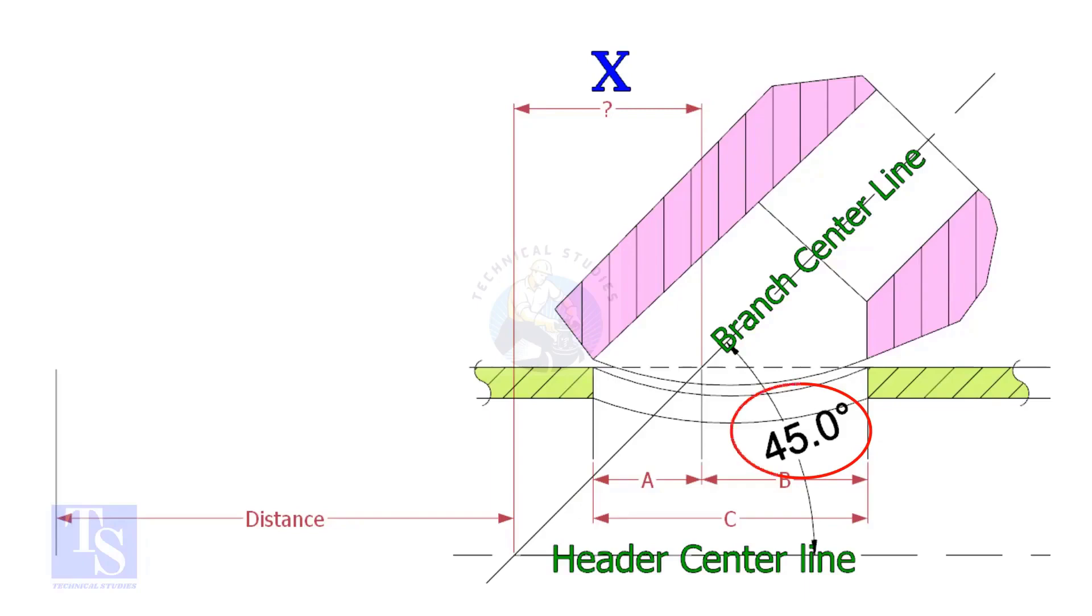If the including angle is 45 degrees, the value of x will always be half OD of the header. Suppose the OD of the header is 400 millimeters, then the value of x will be 200 millimeters. Mark the half OD on the direction of the laterolette. Mistakes happen when marking the direction of the laterolette.